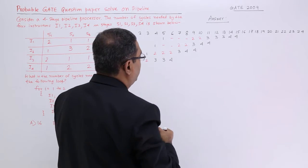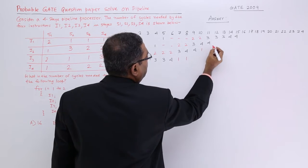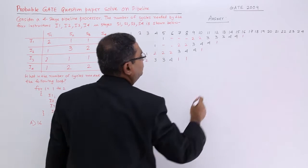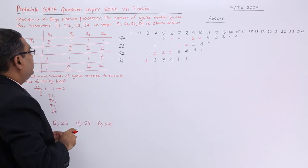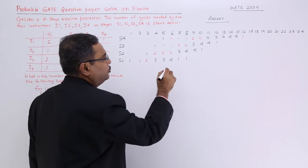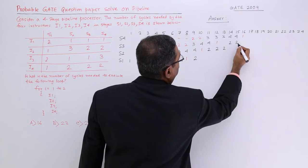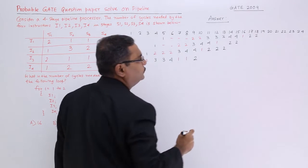Then I shall go for instruction number 2: 1, 3, 2, 2. So 1, 3, 2, 2.